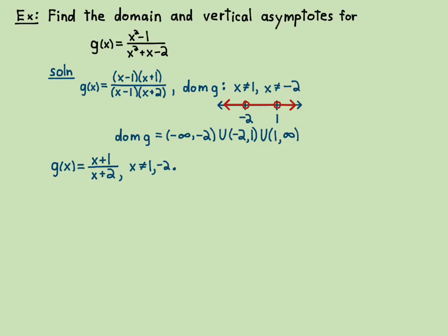So what did I do here? I reduced the x minus 1 over x minus 1. Now I'm going to look for vertical asymptotes. To find the vertical asymptotes, I have to reduce this. So I find the domain first, then reduce it to find the asymptotes, the vertical asymptotes. There's only 1 in this case.